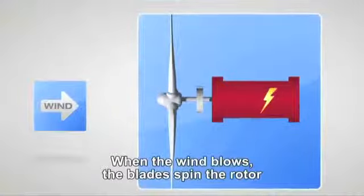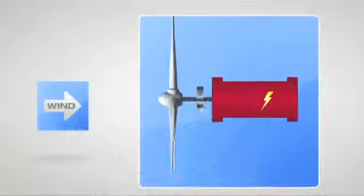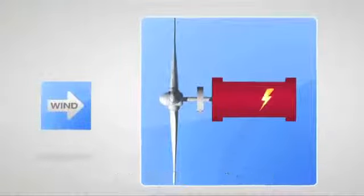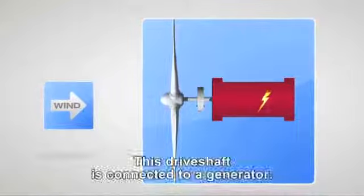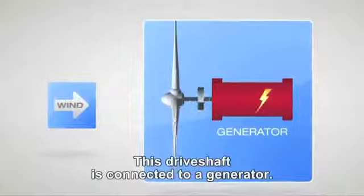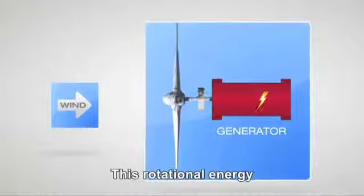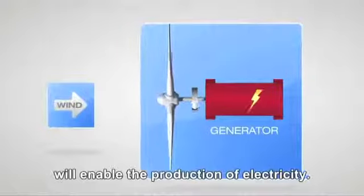When the wind blows, the blades spin the rotor, which in turn rotates the shaft fitted to the nacelle. This drive shaft is connected to a generator. This rotational energy will enable the production of electricity.